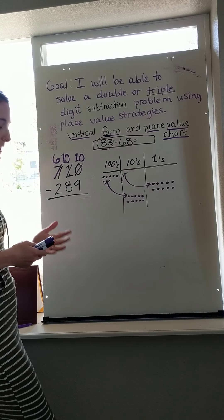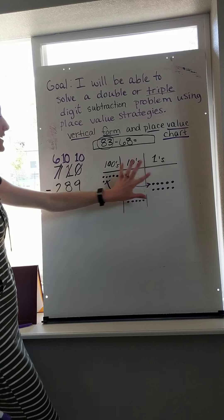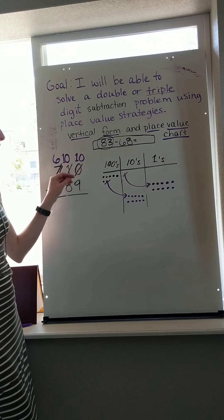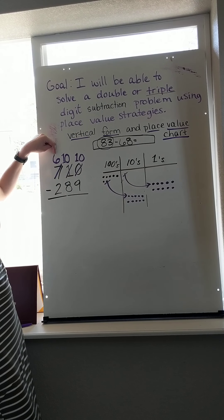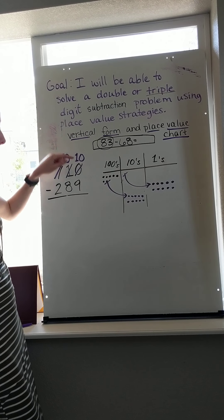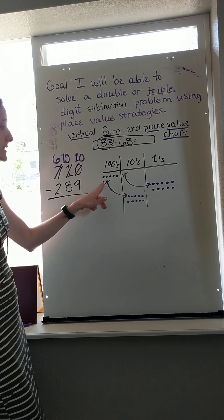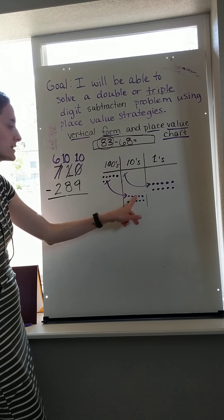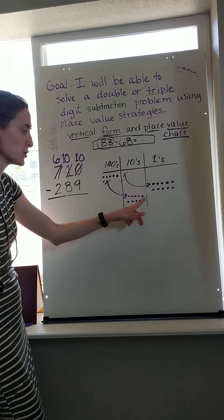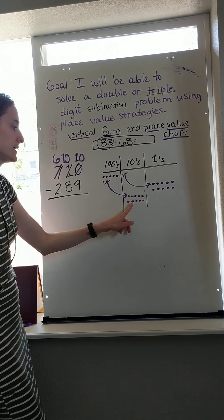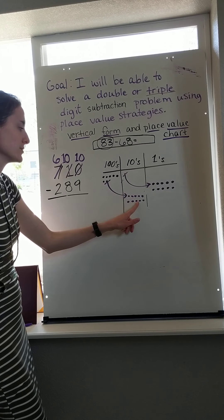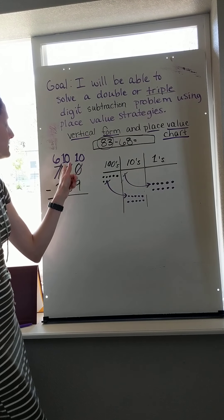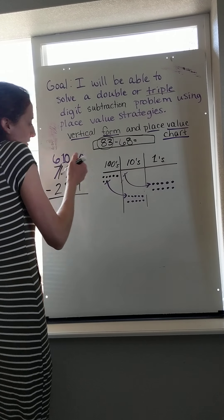But over here, what you should see is that you still have 710, you just put it in different places. Because 600 plus 10 tens is the same as 600, 610, 620, 630, 640, 650, 660, 670, 680, 690, 700, and then there's 10 over here. That still makes 710.